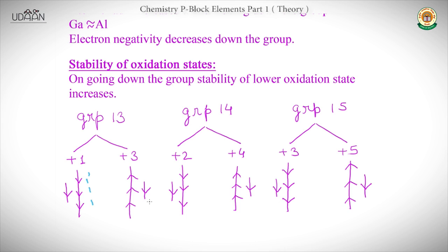This is called the inert pair effect. This phenomenon works in every group — in group 14 the oxidation states are +2 and +4, and in group 15 they are +3 and +5. In every group the same trend occurs due to the inert pair effect.